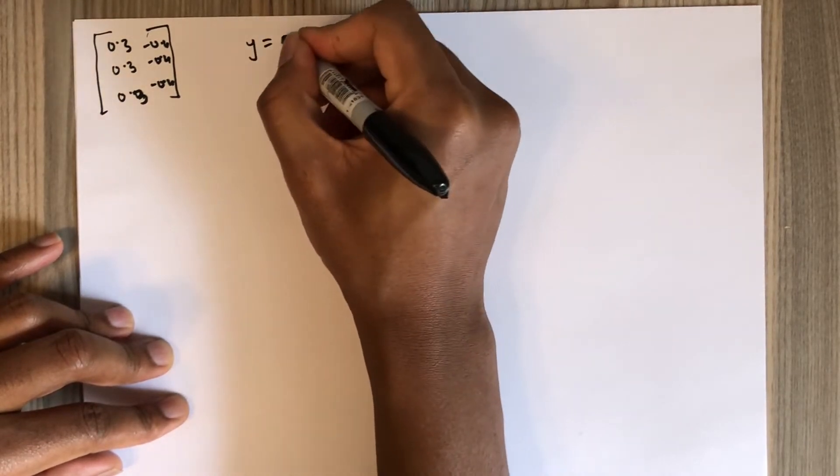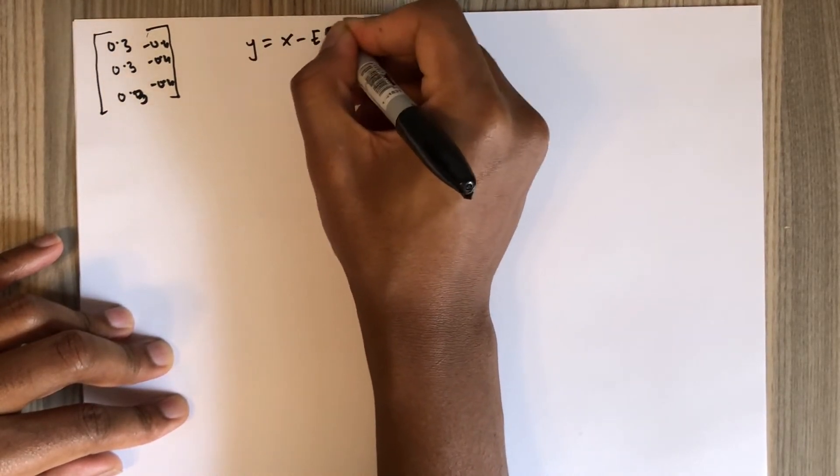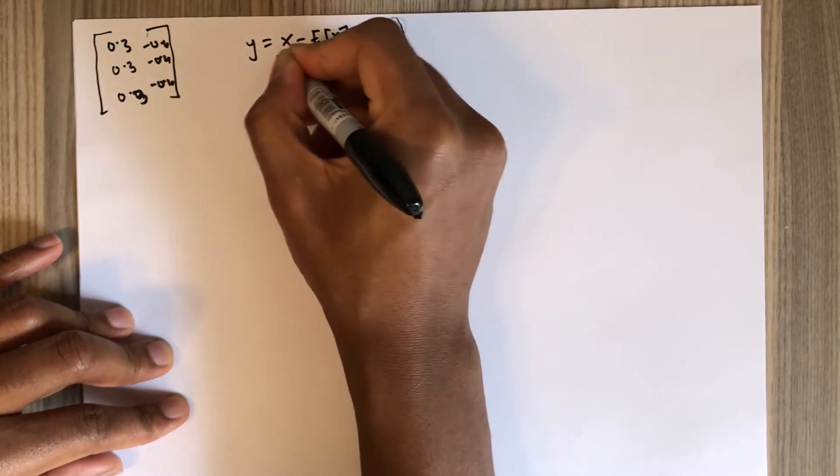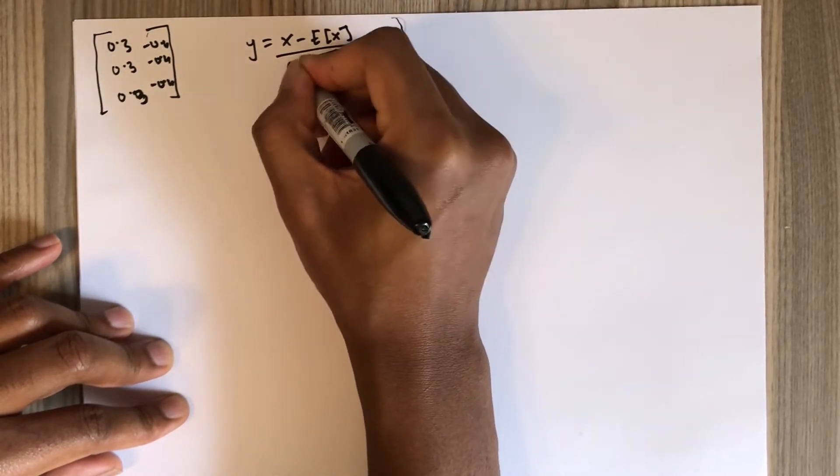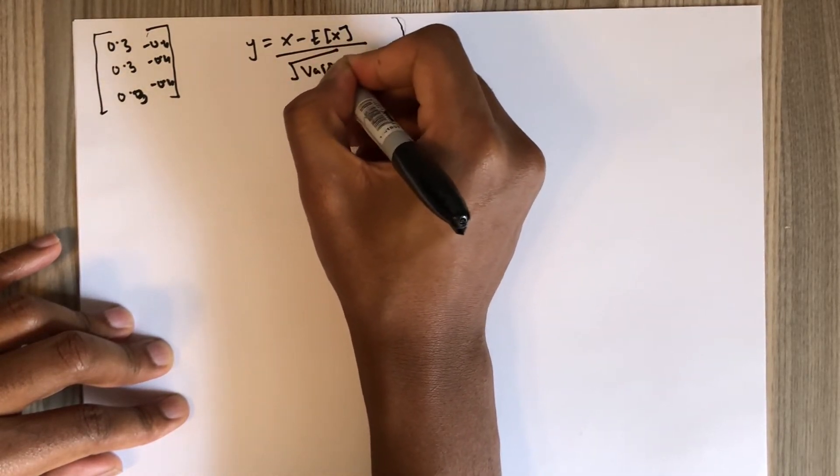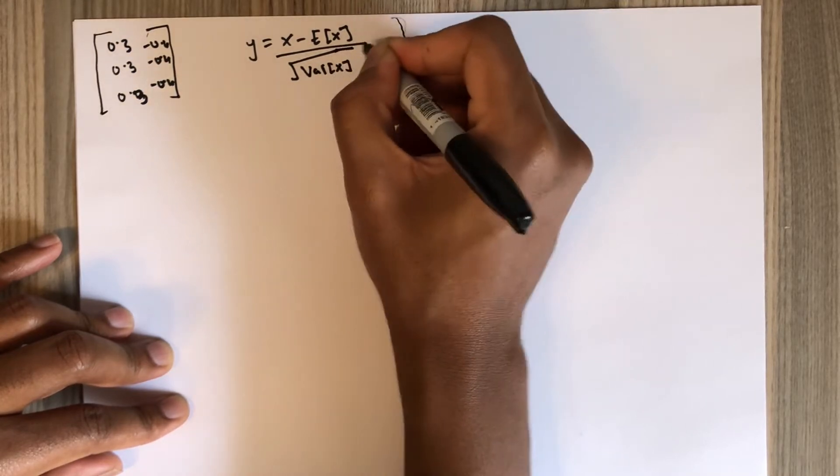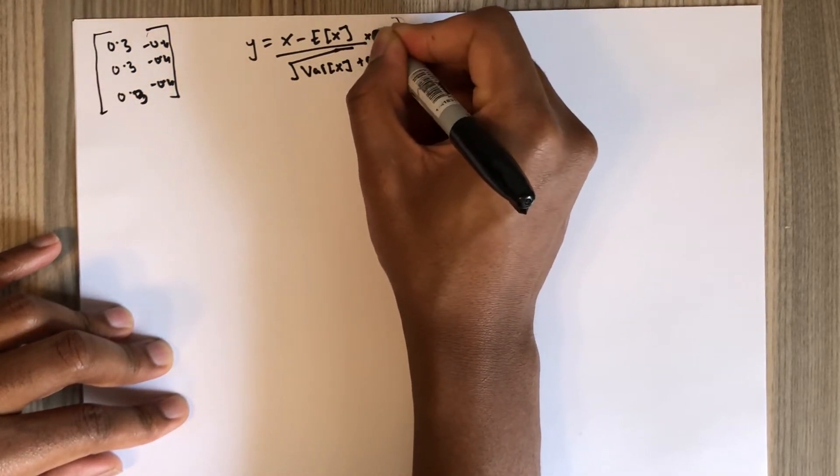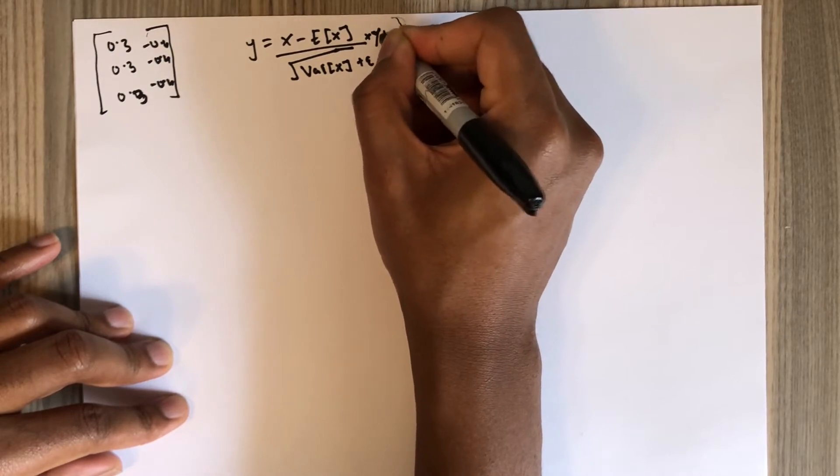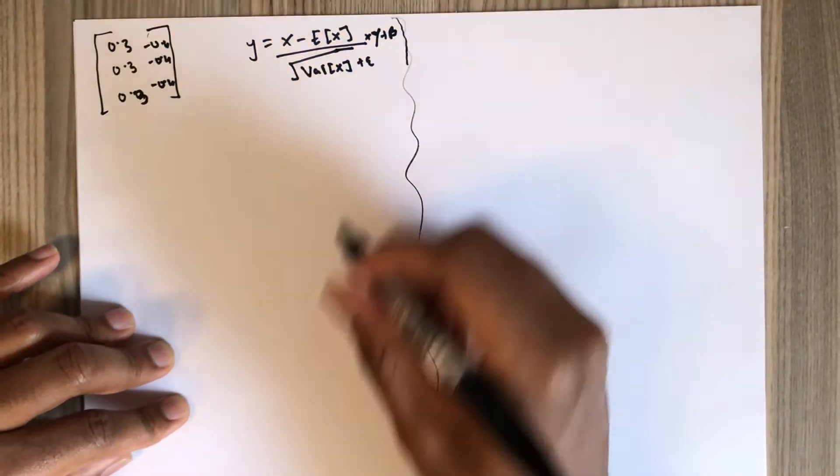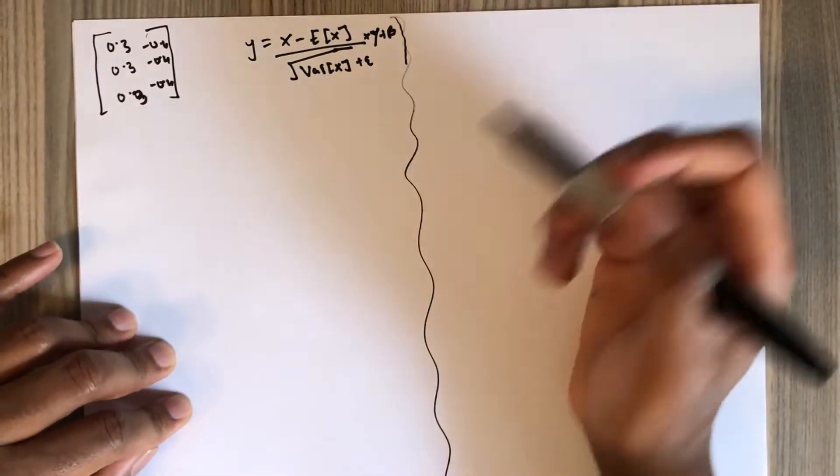It uses this formula: X minus the expected value of X, divided by the square root of the variance of X plus epsilon, multiplied by some parameters which you can just ignore for this video. We'll make epsilon 0 for simplicity.